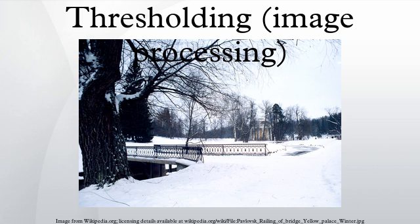Object attribute-based methods search for a measure of similarity between the gray level and the binarized images, such as fuzzy shape similarity, edge coincidence, etc. Spatial methods use higher-order probability distribution and/or correlation between pixels.